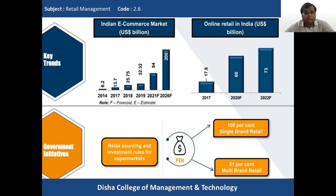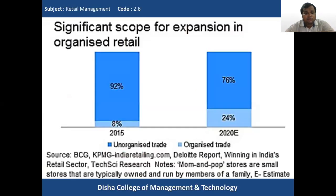Today's class covers retail sector structures. There are two major sector structures in Indian retail: the unorganized sector and the organized sector. As per BCG and KPMG research, in 2015 the unorganized sector was 92% and the organized sector was 8%. By 2020, it was expected to shift to 76% unorganized and 24% organized.